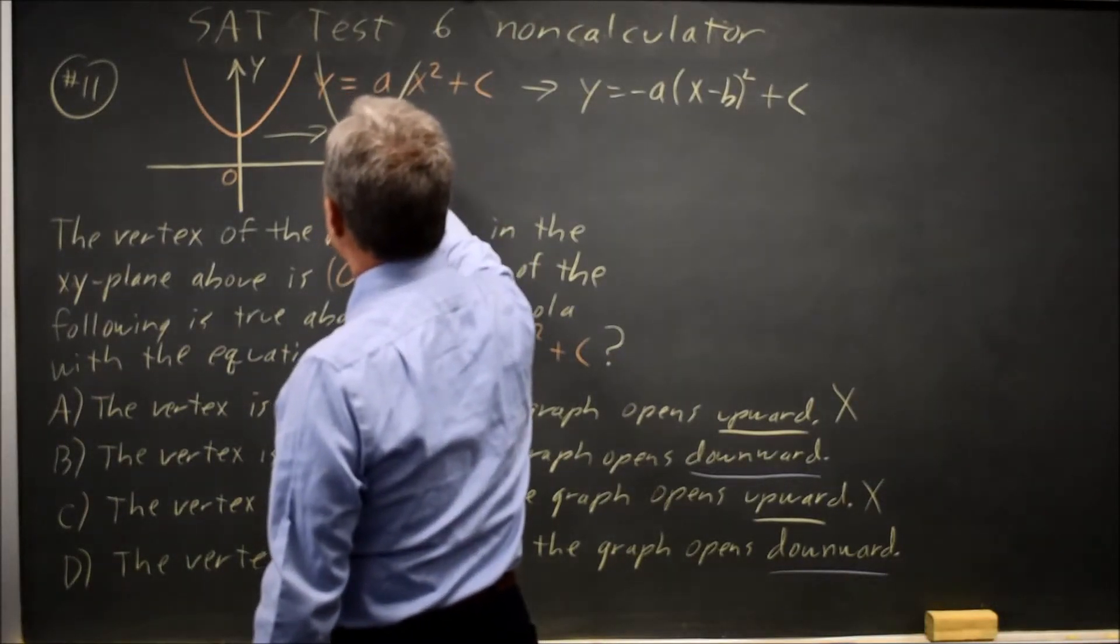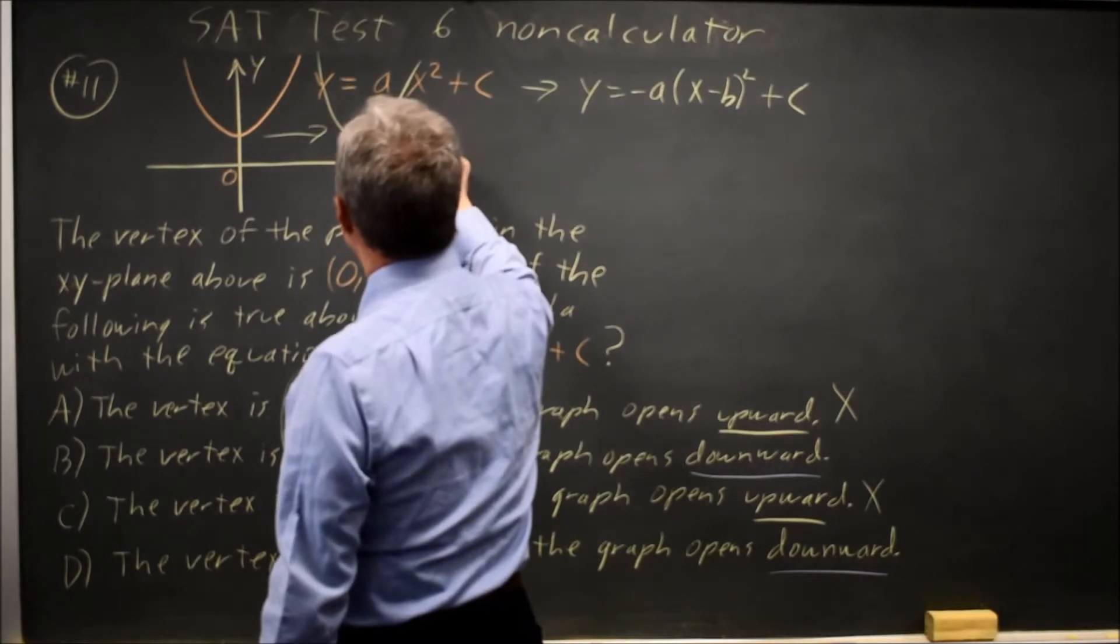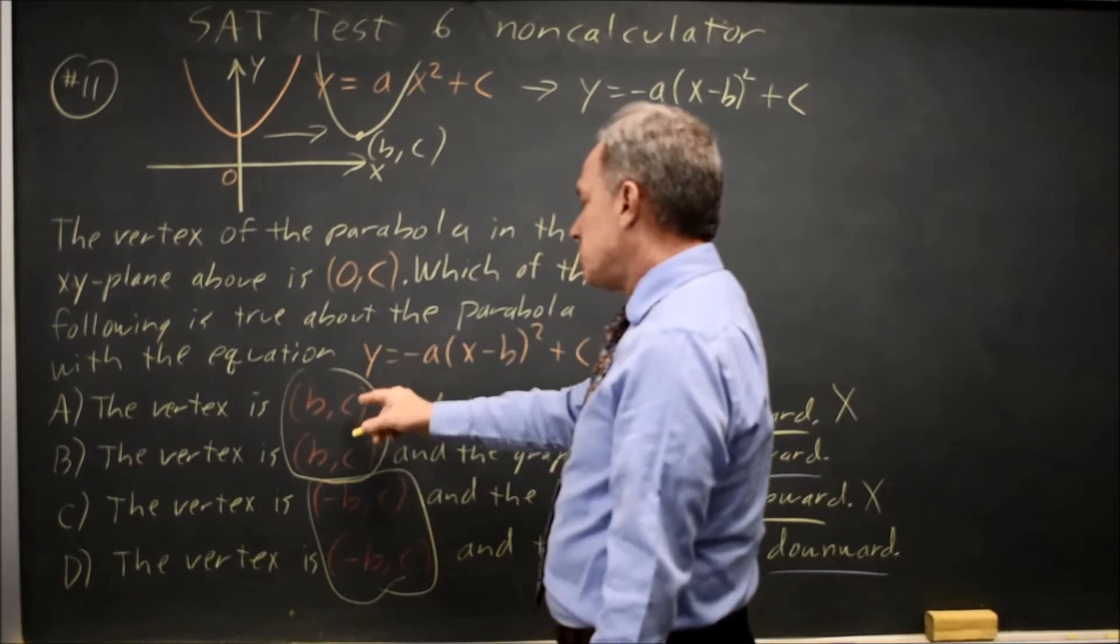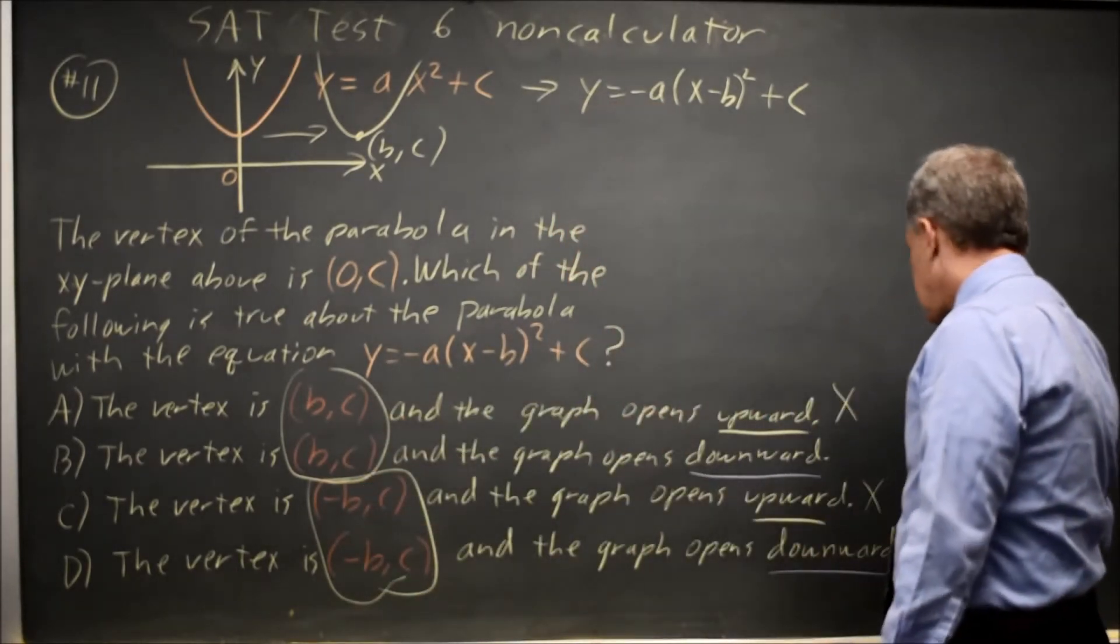So our vertex would be (b, c) if the original vertex was (0, c). So that's choice a or b. It is not c or d.